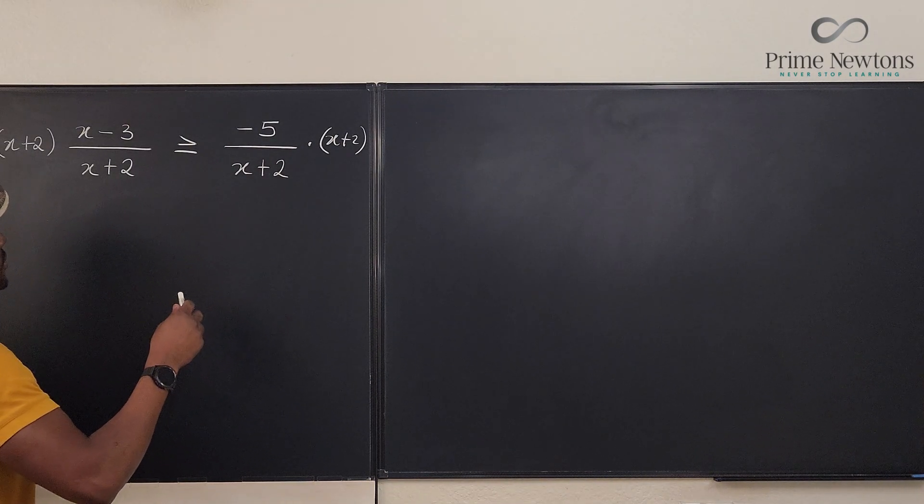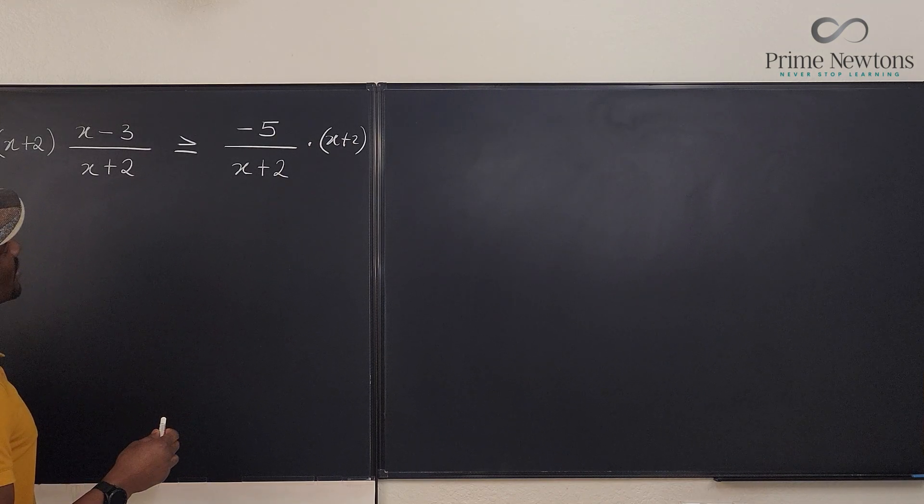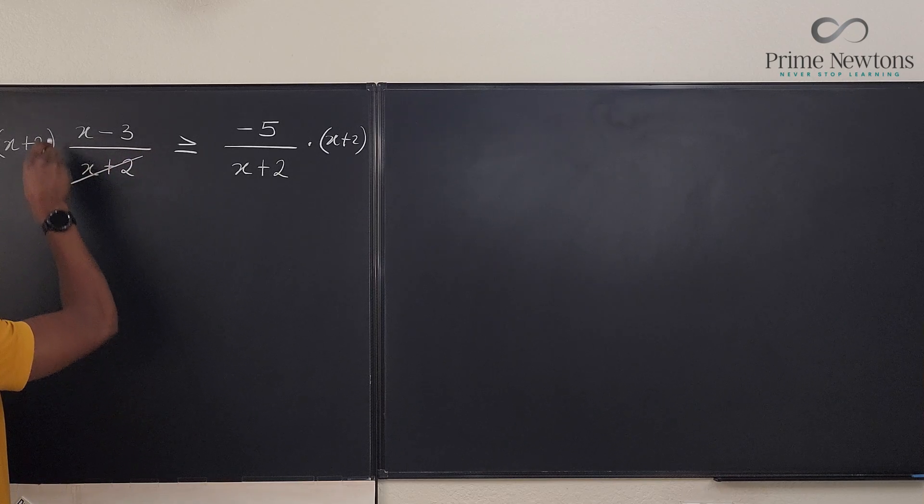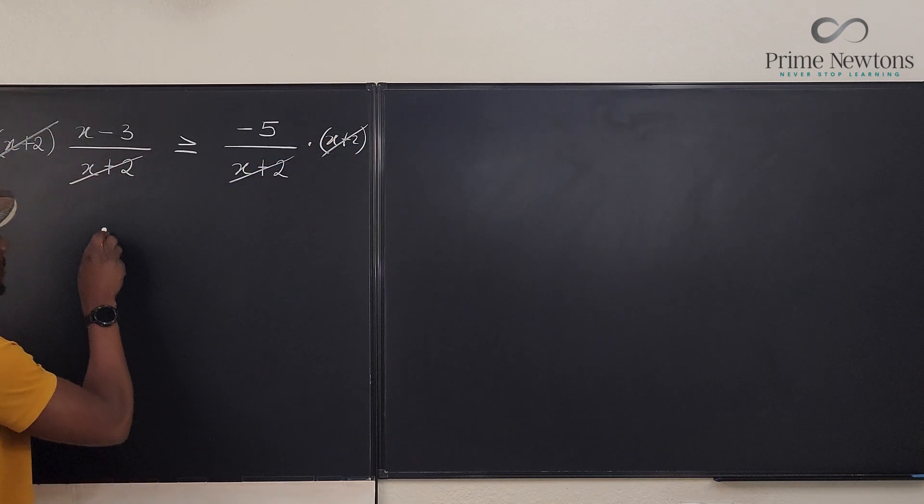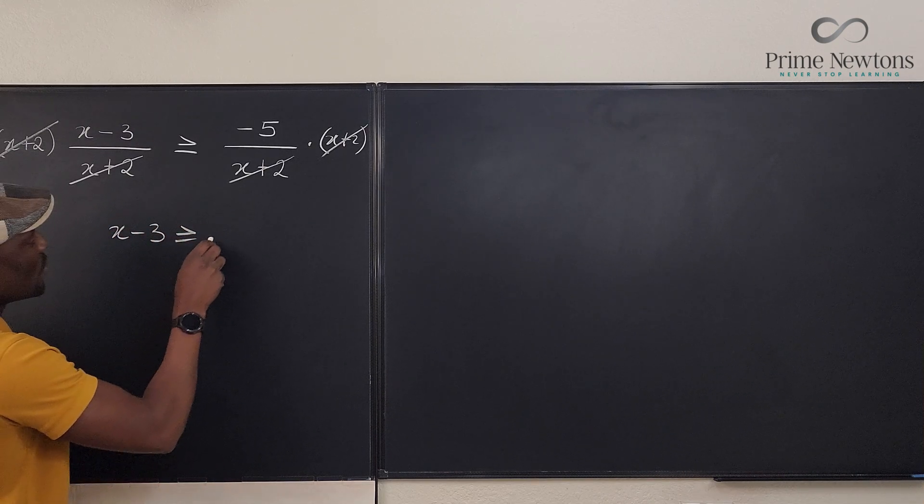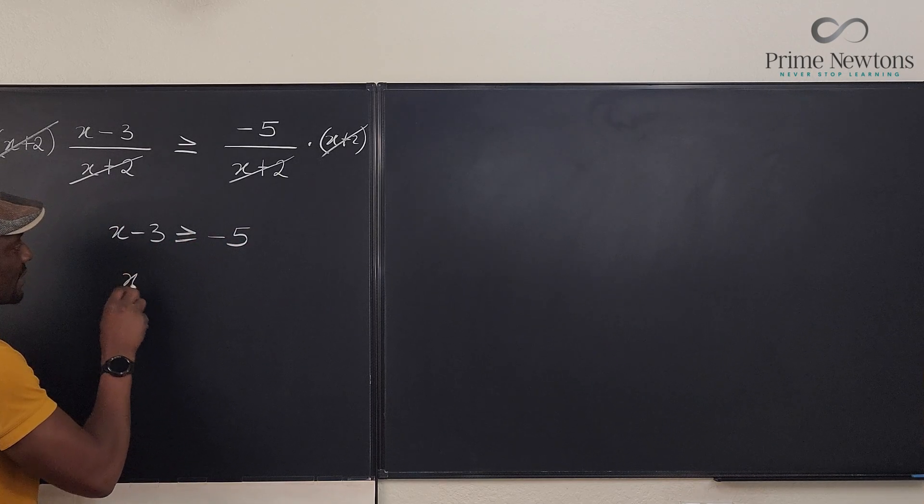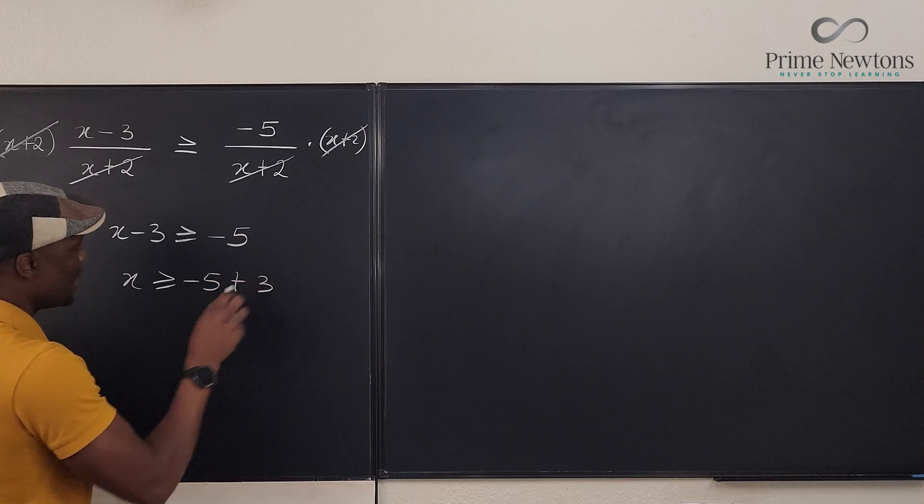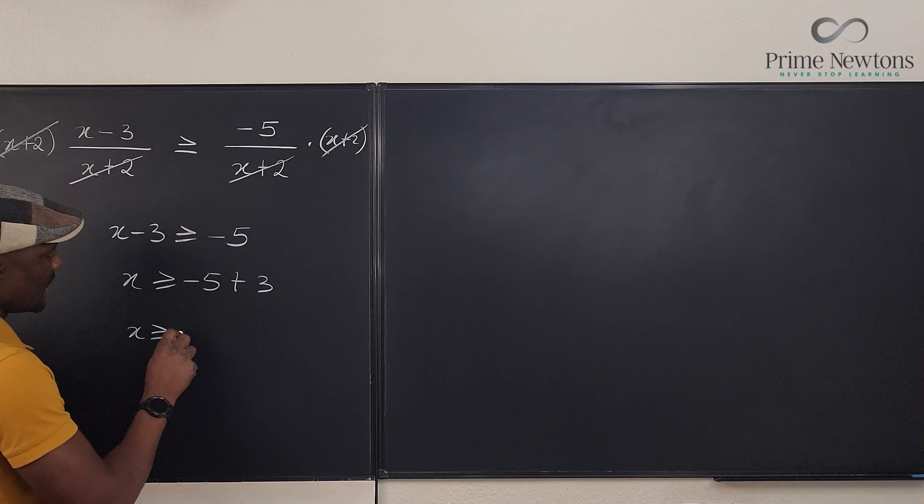Because if you do cross multiplication, what would you end up with? This will cancel this and this will cancel this and you're going to have x minus 3 is greater than or equal to negative 5, right? And you can move this over and you have x is greater than or equal to negative 5 plus 3. So x is greater than or equal to negative 2, right?